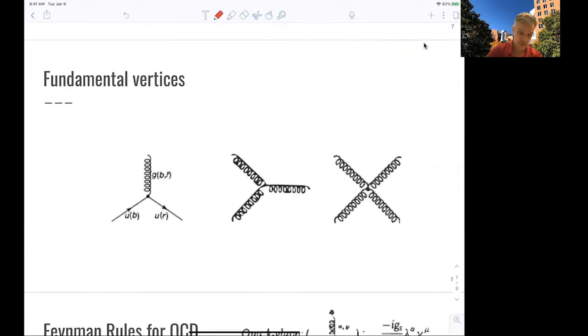The fundamental vertices, I introduced one already, but there's two more. That's because the gluon carries charge and can couple to itself. We already discussed this in a recitation. So we have those self-couplings of the gluon here, and those vertices are as relevant or more relevant even than the one here.